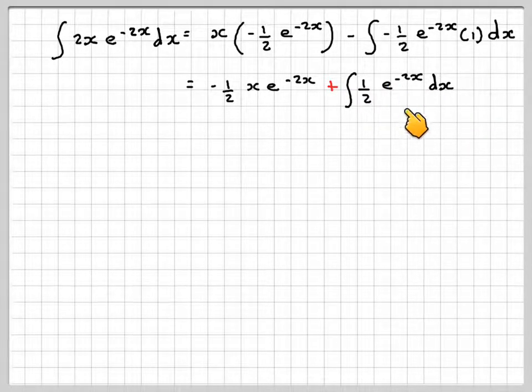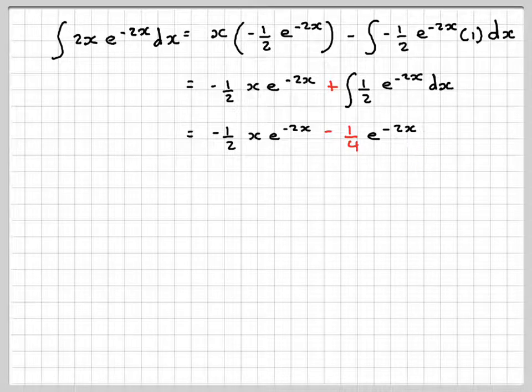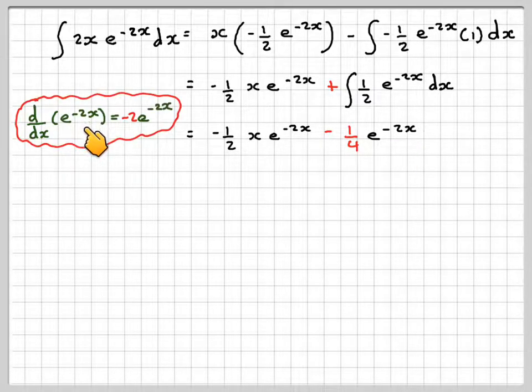So integrating this last part, that will be minus a half x e to the minus 2x minus a quarter e to the minus 2x, using the idea that d dx of e to the minus 2x equals minus 2 e to the minus 2x, plus c.